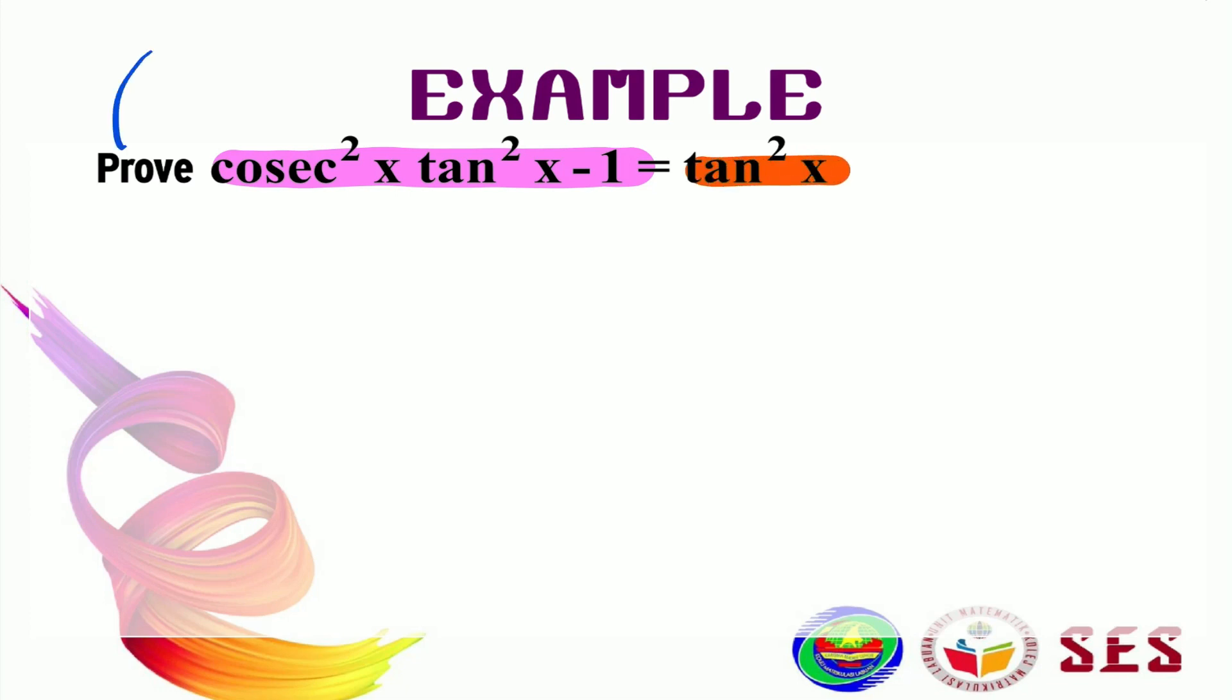To answer proving questions like this, we need to choose a side first. And to choose a side, it is better to choose the side that has more complicated expression. So, between this left-hand side and this right-hand side, which one is more complicated? It is obvious that the left-hand side is much more complicated than the right-hand side, right?